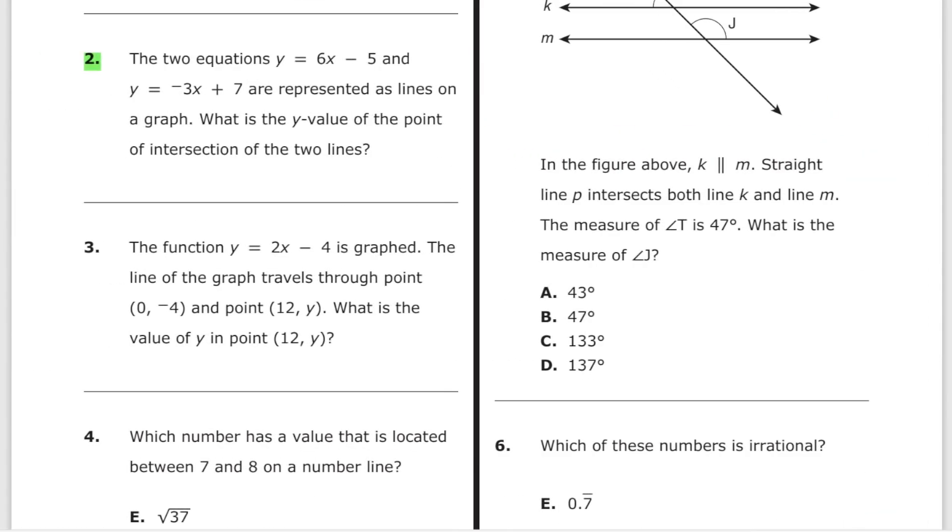The next question. The two equations y equals 6x minus 5 and y equals negative 3x plus 7 are represented as lines on a graph. What is the y-value of the point of intersection of the two lines? Very simple.